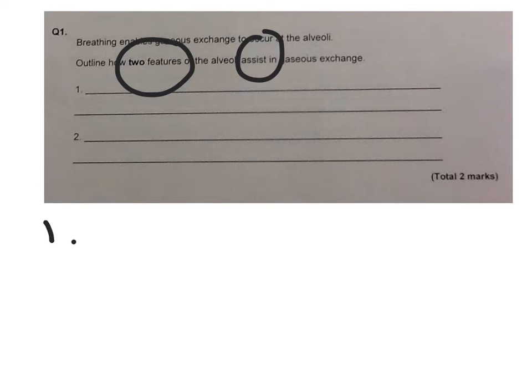So two key areas here. Firstly, the alveoli has a large surface area which is made up of only one cell. Now the purpose of that one cell, or the benefit of that one cell, allows diffusion to occur very easily. So the oxygen and carbon dioxide can go from the alveoli into the bloodstream very easily.